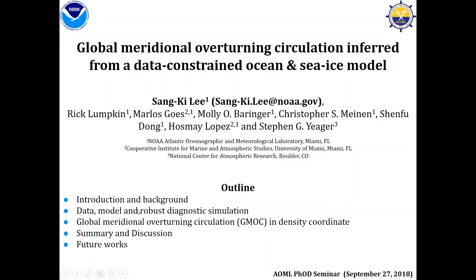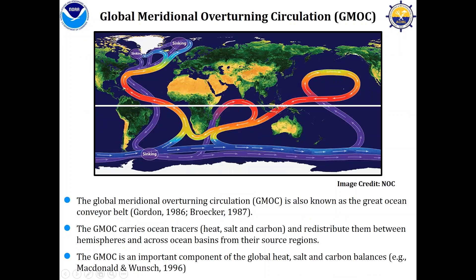The global meridional overturning circulation, also known as the great ocean conveyor belt, carries important ocean tracers such as heat, salt, carbon, and nutrient components, redistributing them between hemispheres and across ocean basins. It is a very important component of the global heat, salt, carbon, and nutrient budget.